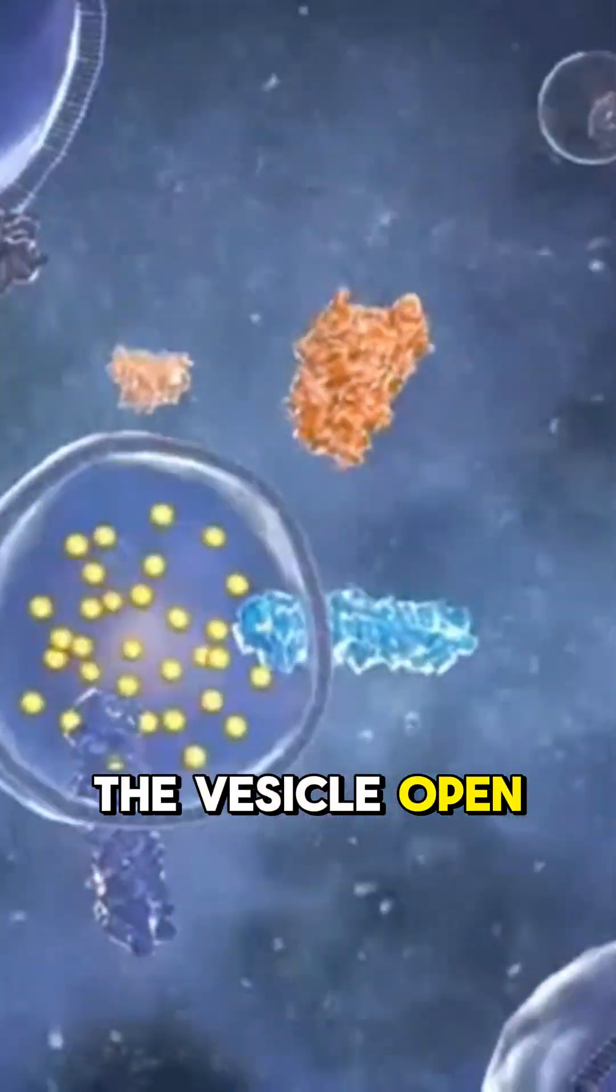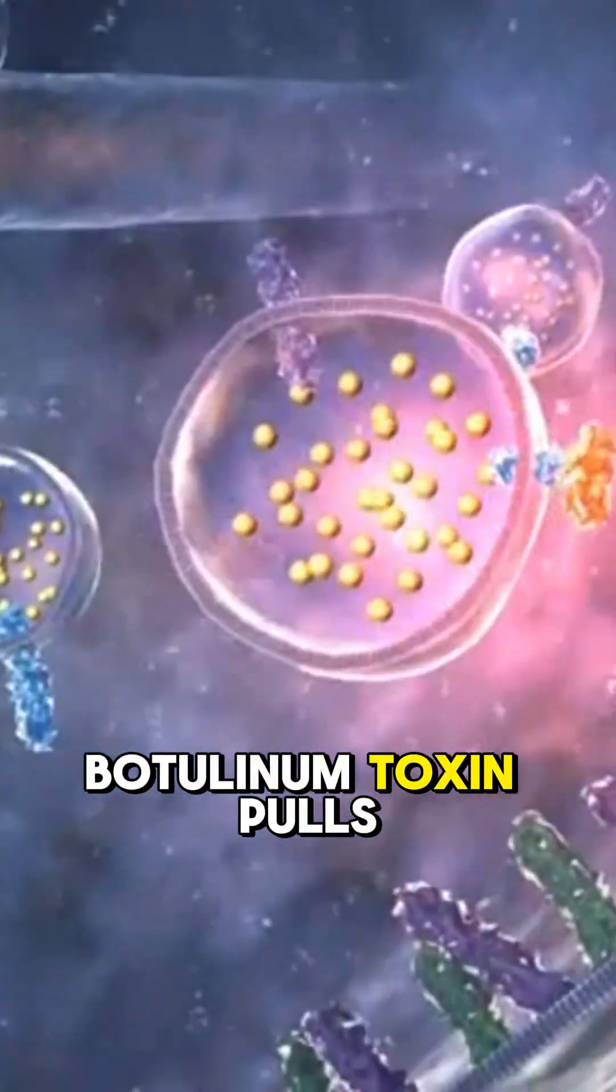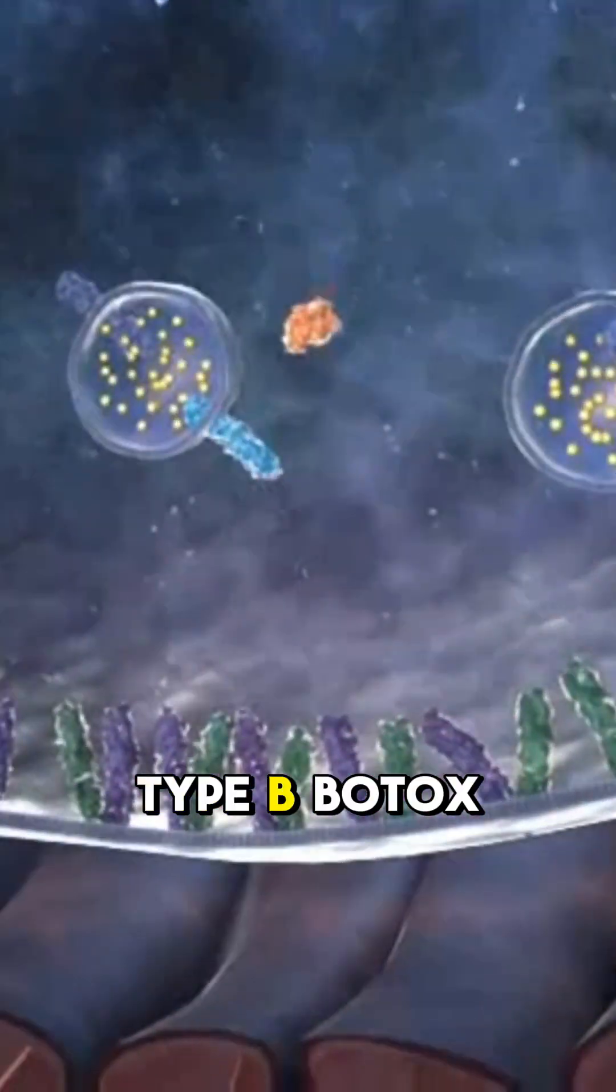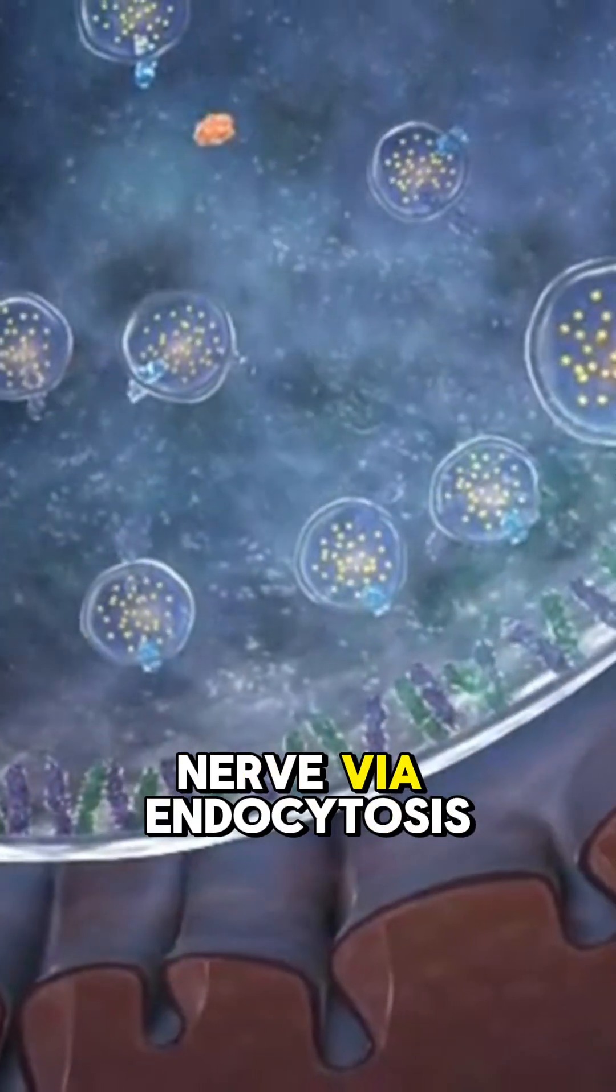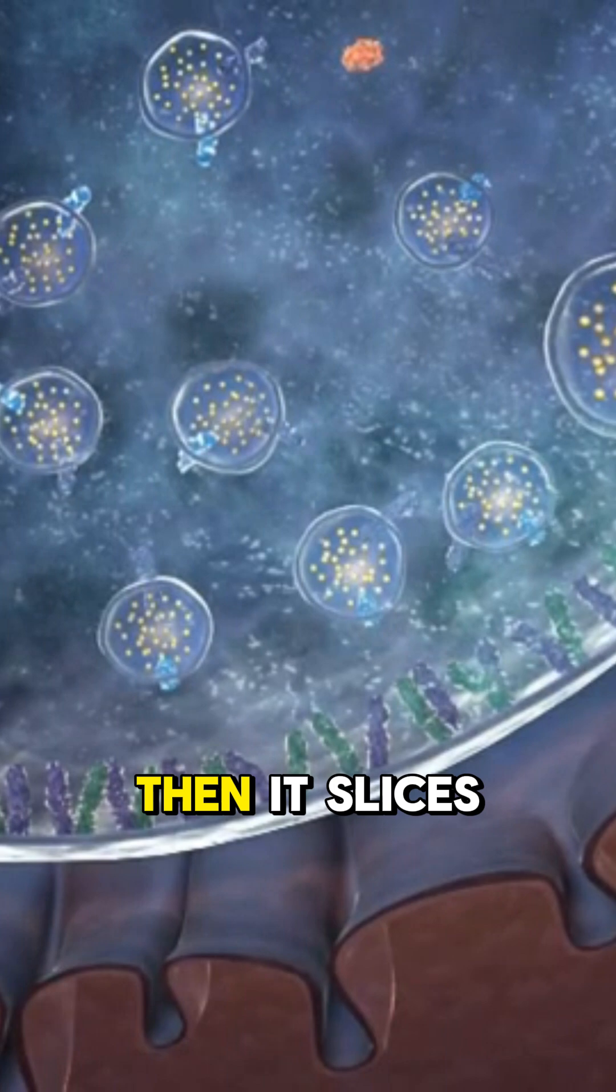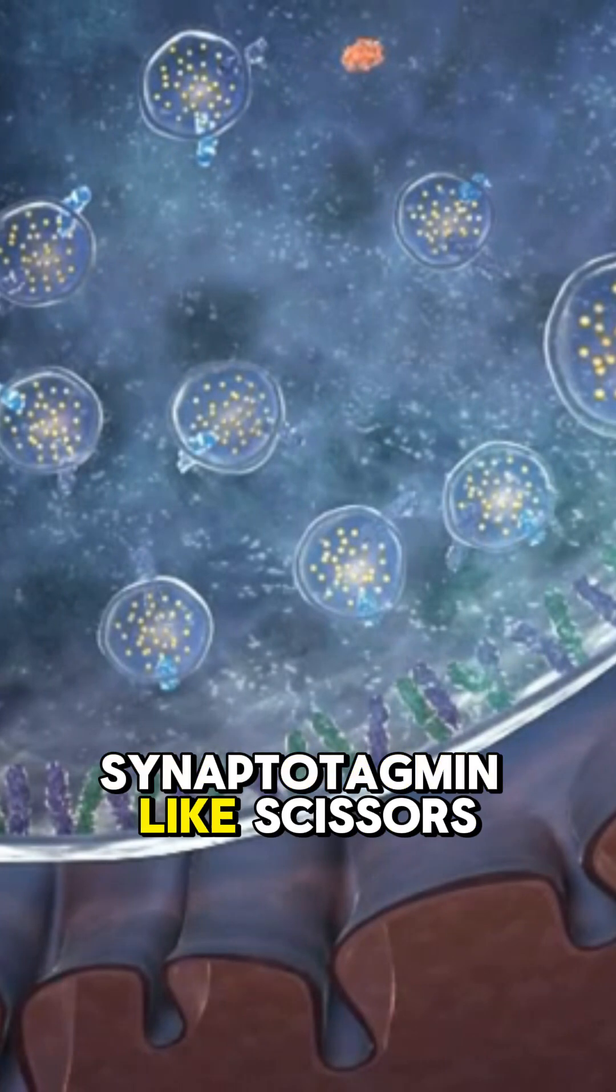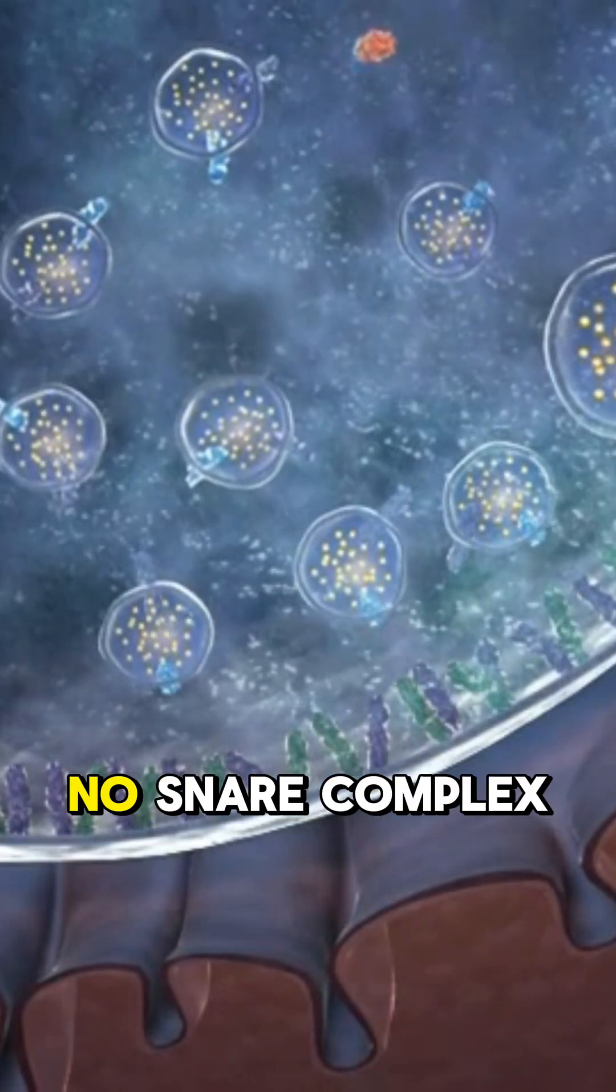But here's where botulinum toxin pulls off its sabotage. Type B botox sneaks into the nerve via endocytosis, then it slices synaptobrevin like scissors through a rope. No SNARE complex, no fusion, no acetylcholine.